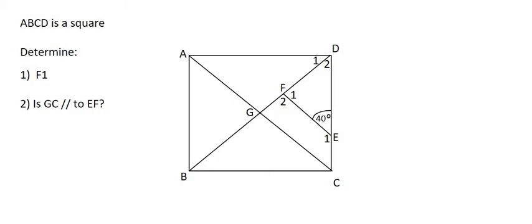It's sort of like a mixture between a rectangle and a rhombus. The first question asks us to determine F1, which is an angle, so we should have a little arrow over there, and that's this angle over here.